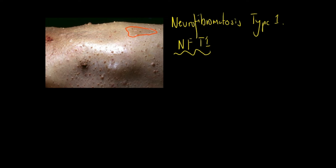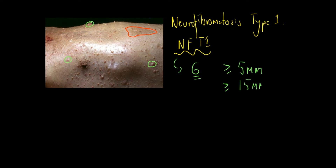You can also have dermal neurofibromas, located all along the skin surface — I'm highlighting a few of them in green here. Café au lait spots form part of the diagnostic criteria for NF1, where you need at least six spots. In pre-pubertal individuals they should be at least 5 millimeters in diameter, and in post-pubertal individuals at least 15 millimeters in diameter.